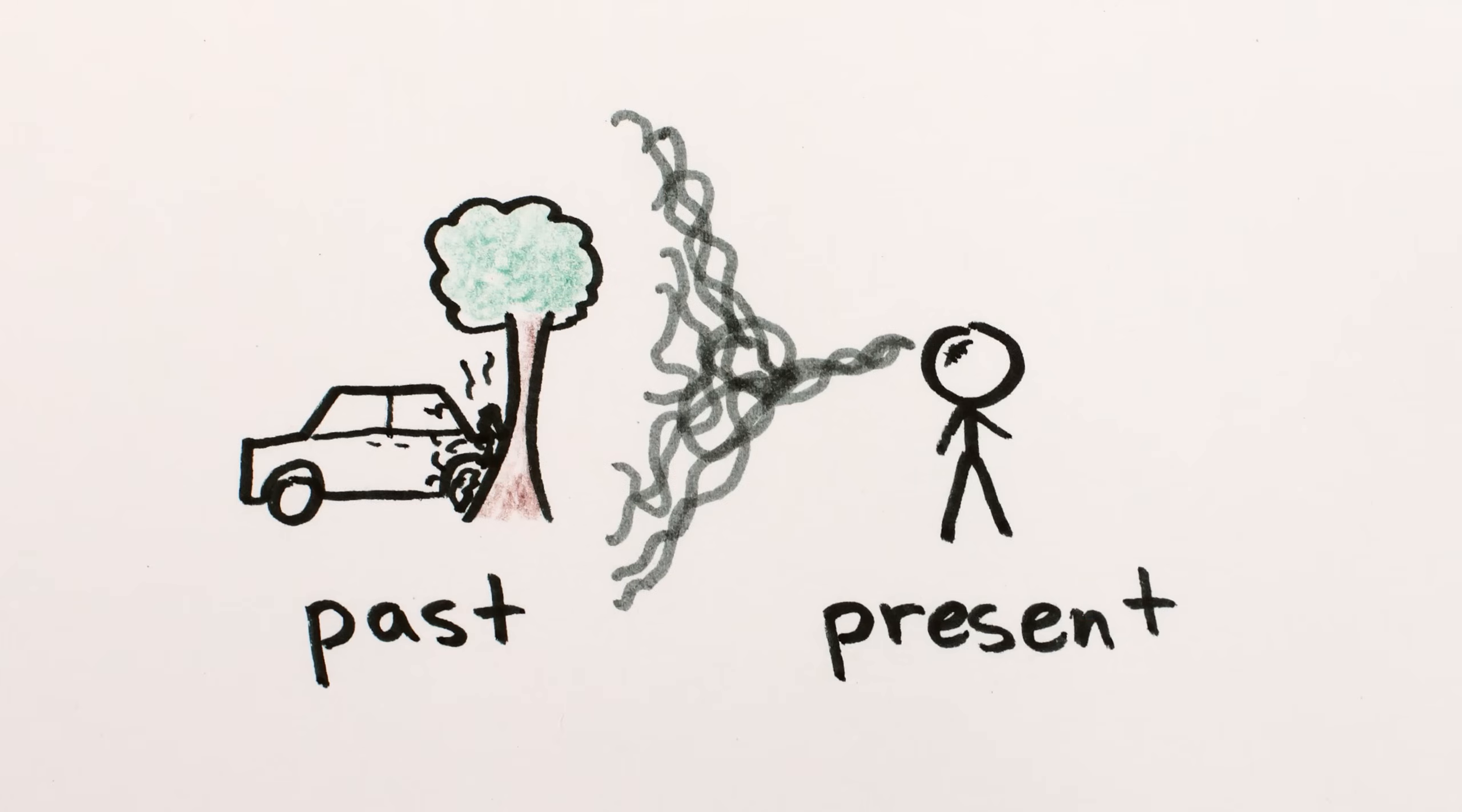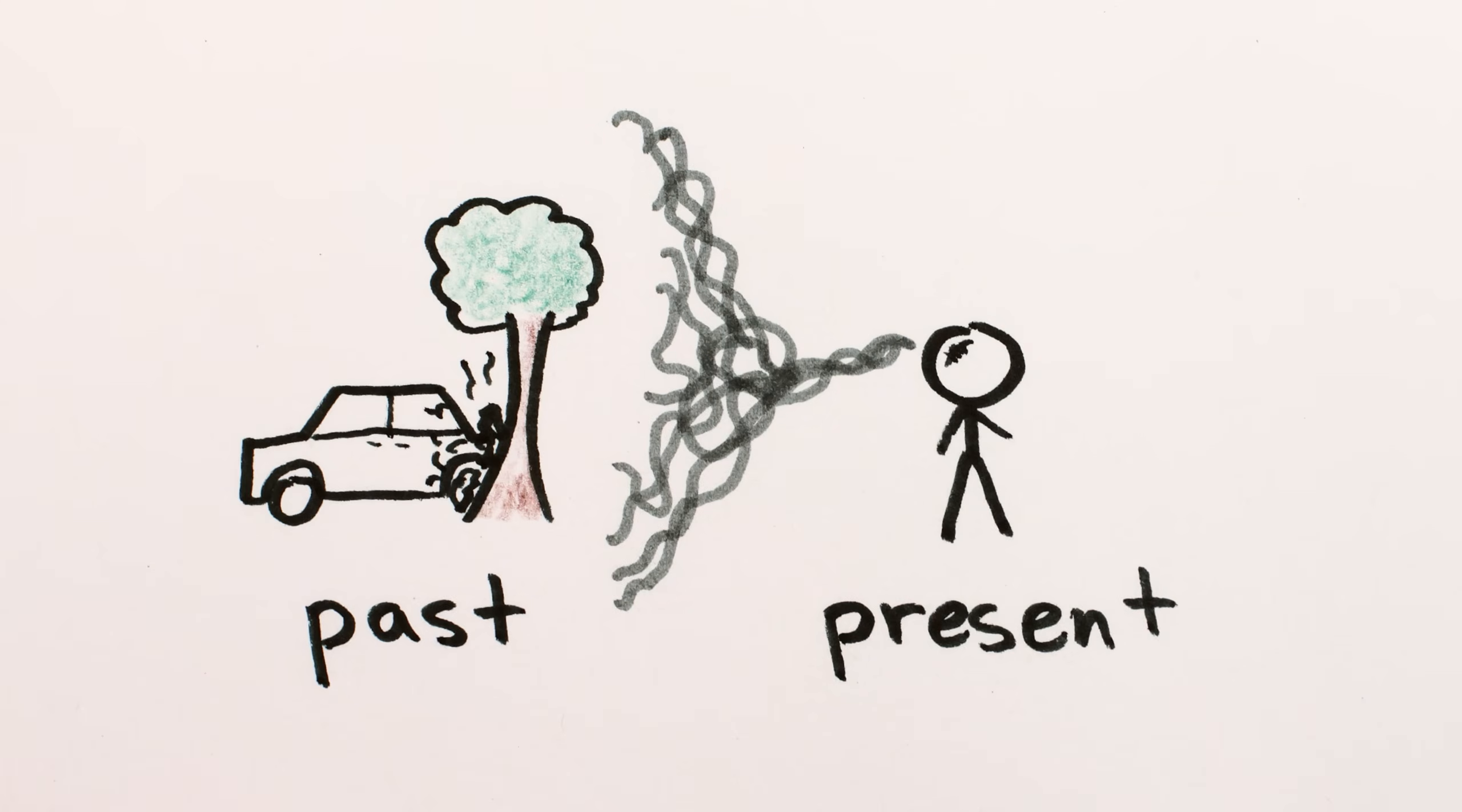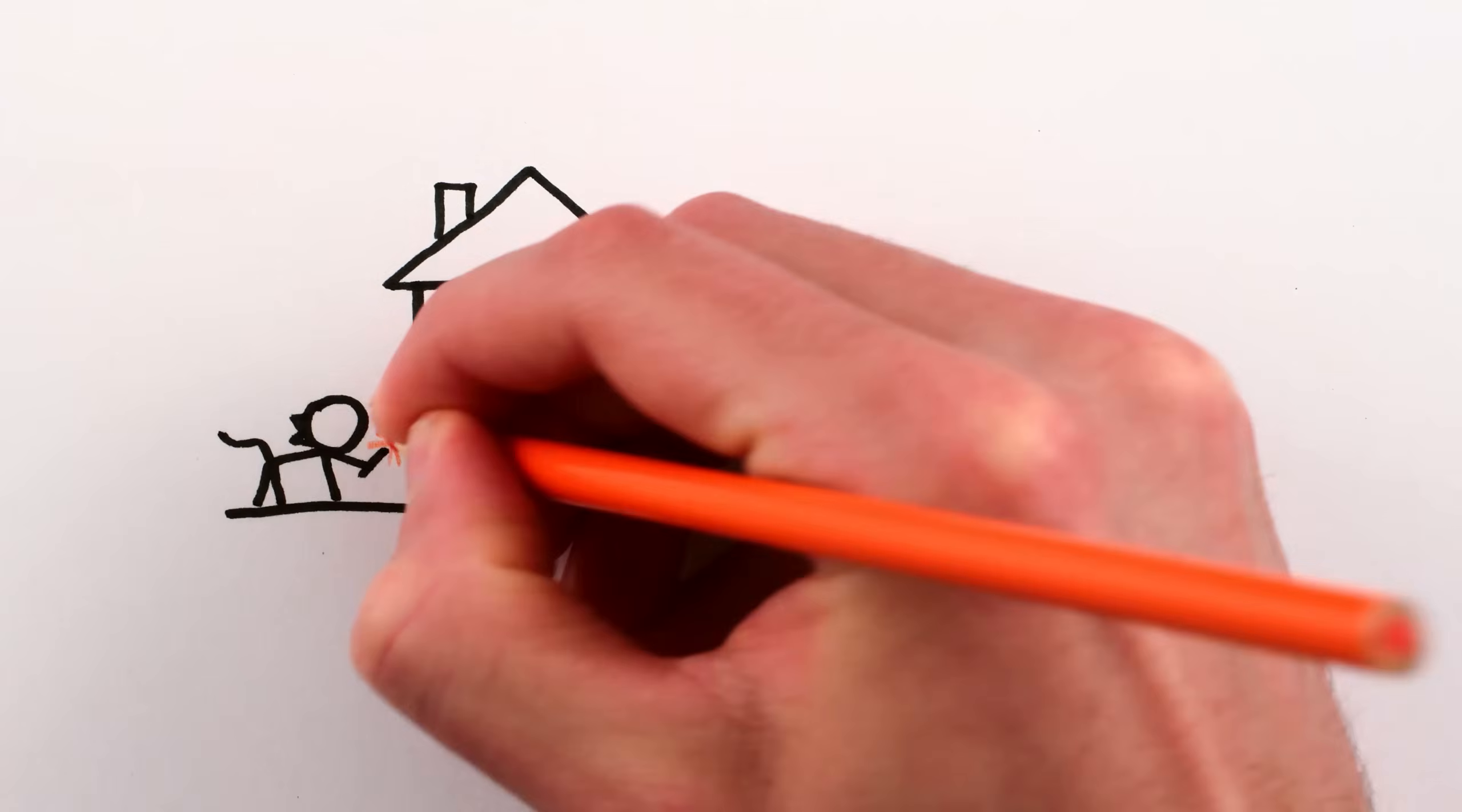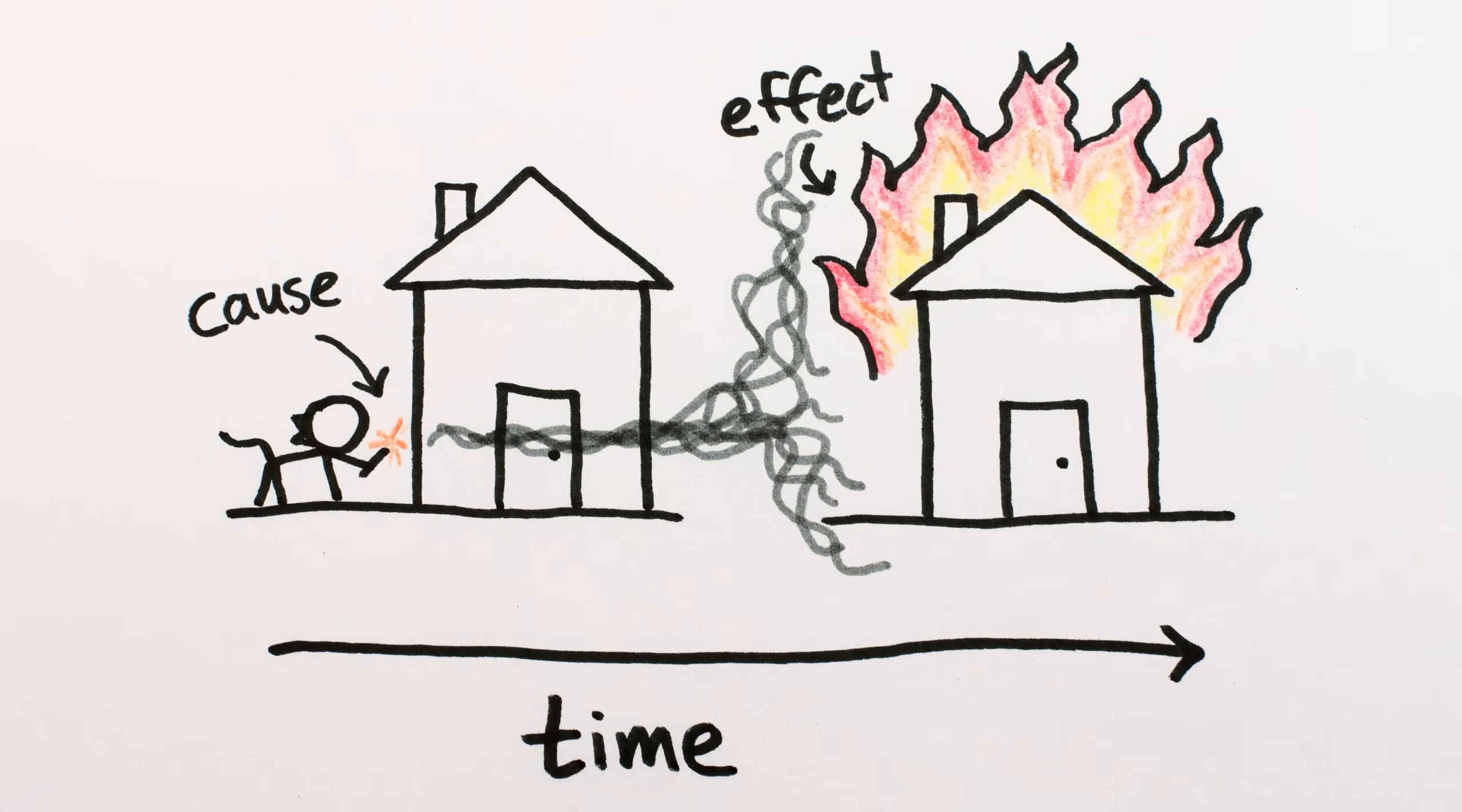In general, when a small change to the present would imply a big change to the past, the small thing we're changing is thought of as a record or a memory. So the distinctions between cause and effect, records and predictions, aren't fundamental to underlying physics. They only really make sense on the large scale because of the direction of time.